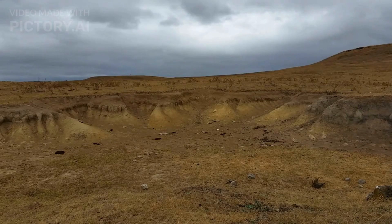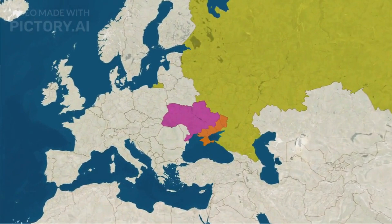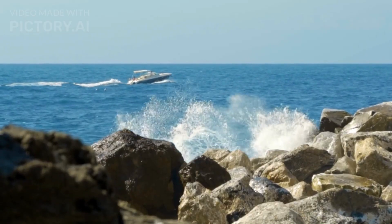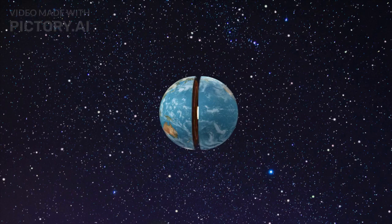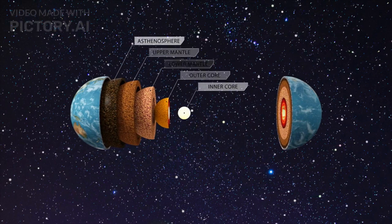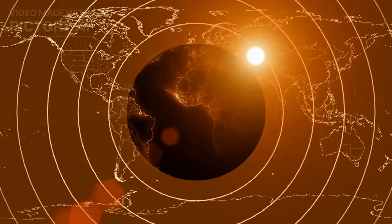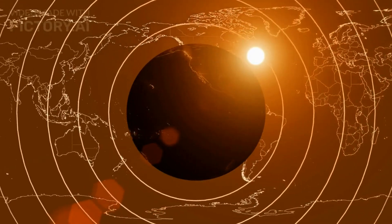Earthquakes are caused by the movement of tectonic plates beneath the Earth's crust. They primarily occur at or near plate boundaries, where stress builds up due to the friction between plates. The release of accumulated stress leads to sudden movements along faults, resulting in seismic waves and ground shaking. The point on the Earth's surface directly above the earthquake's origin is called the epicenter, while the actual point within the Earth is known as the hypocenter or focus. The depth of the hypocenter influences the severity of ground shaking and the potential for damage.